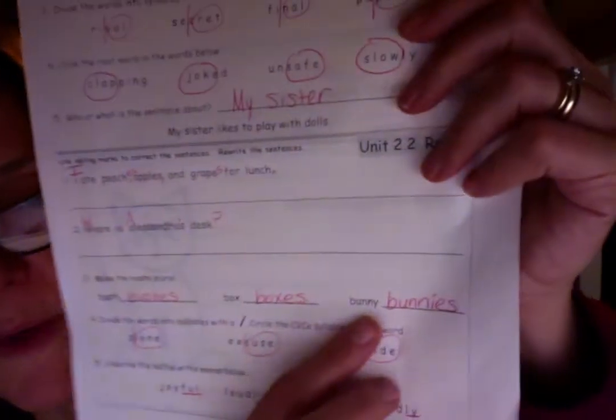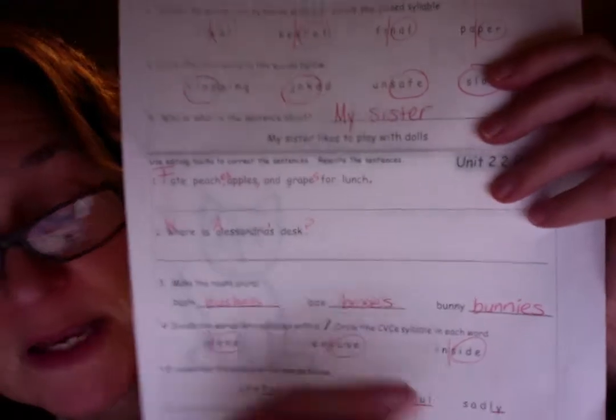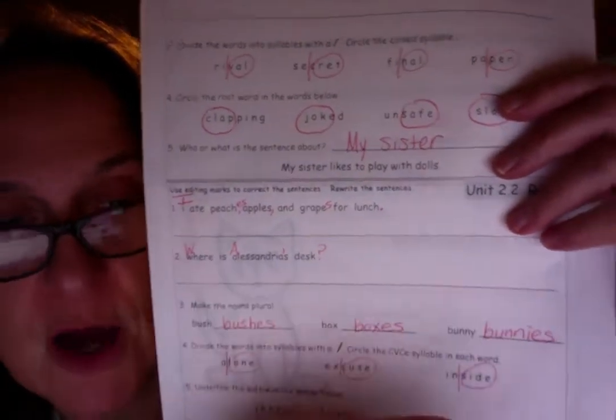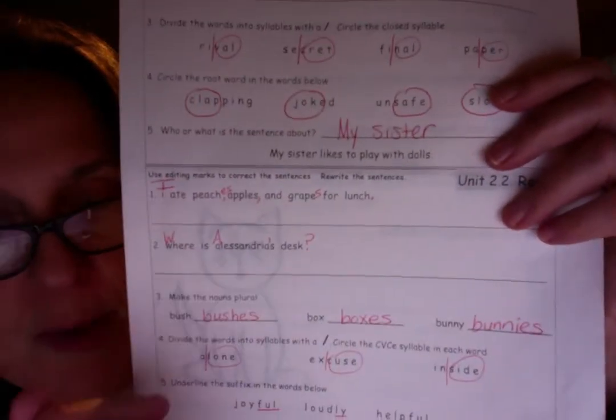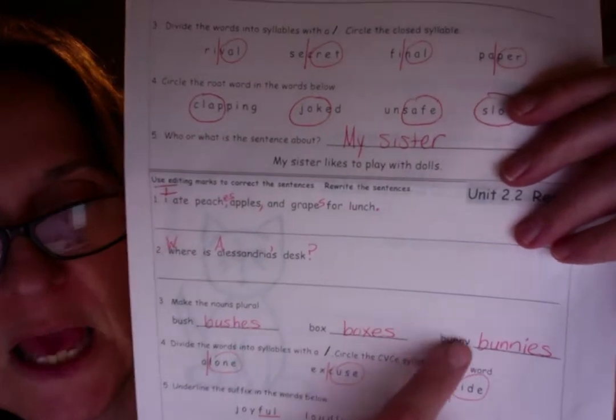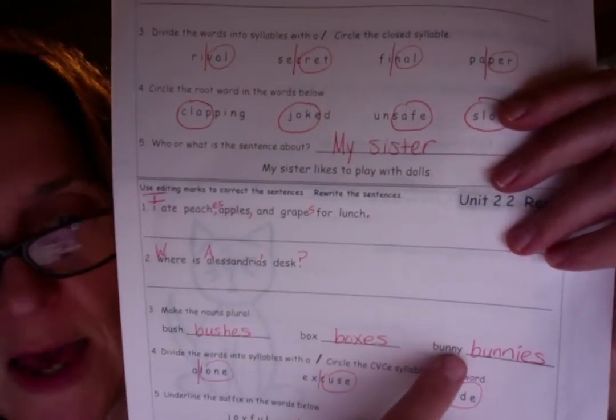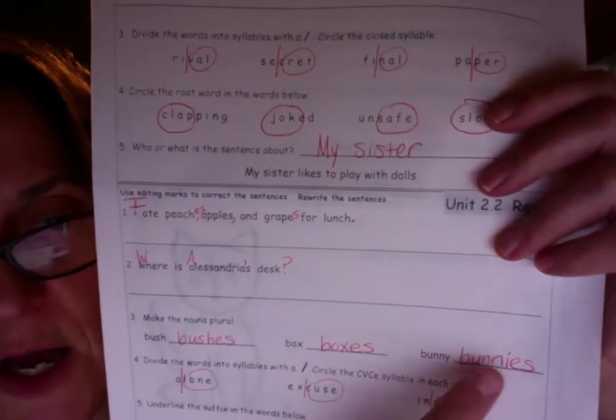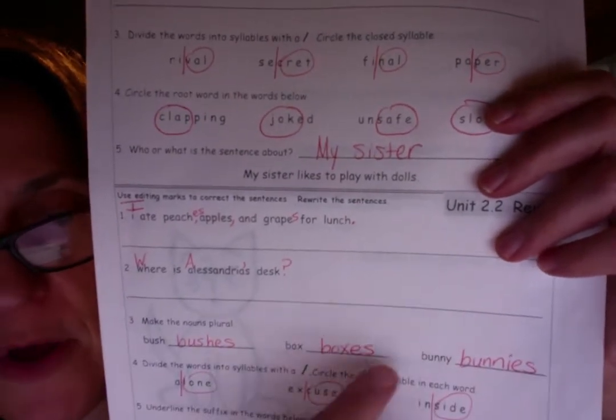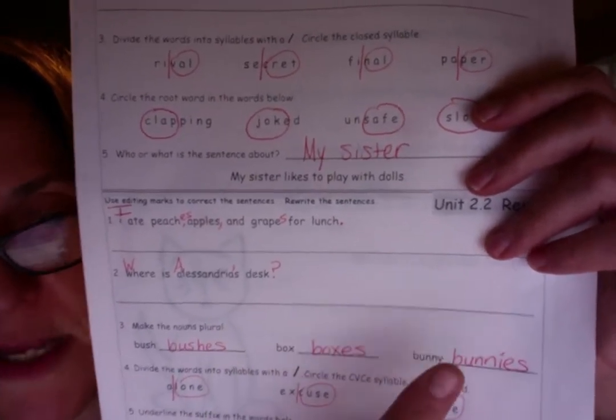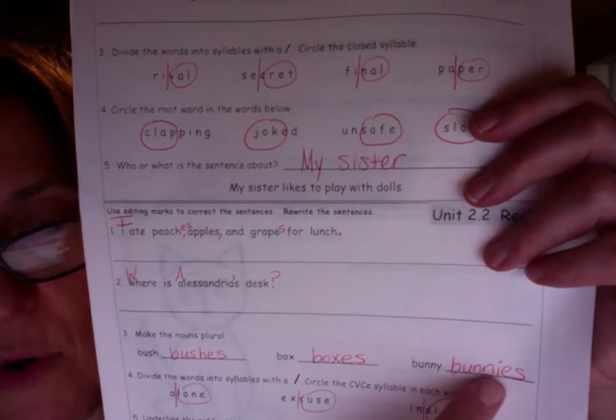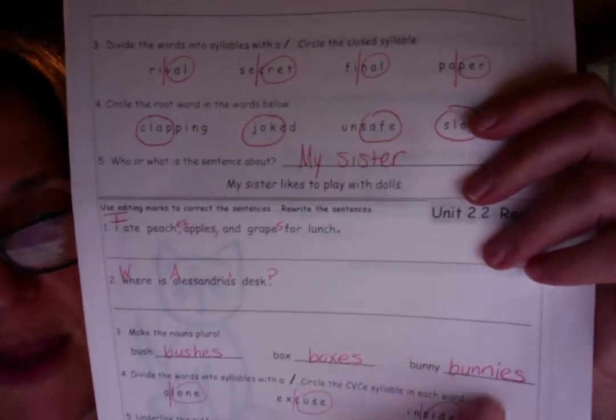And bunny. Here's one we haven't talked about yet. We did in school. And we have talked about this. But I mean on this particular paper. Bunny ends with a consonant Y. So we have to change the Y to an I and add E-S. Remember. If it ends with a consonant Y, change the Y to an I and add E-S. So B-U-N-N-I-E-S for bunnies.